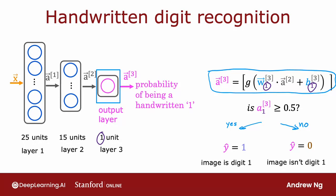And finally, you can optionally take a3 subscript 1 and threshold it at 0.5 to come up with a binary classification label. Is this the digit 1, yes or no?